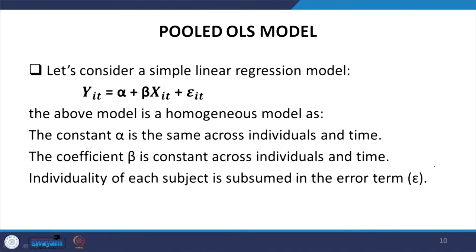In the pooled OLS model, the parameters do not vary over time and are constant for all observations — that is why parameters are not added with subscript i or t. Alpha and beta have no subscripts, so the constant alpha is the same across individuals and time, and the coefficient beta is also constant across individuals and time. The individuality of each subject is subsumed in the error term.